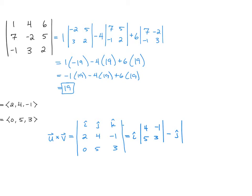We always subtract that middle term, so minus j times 2, negative 1, 0, 3, plus k times 2, 4, 0, 5.